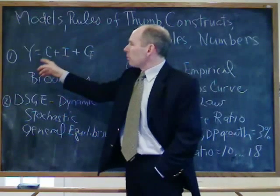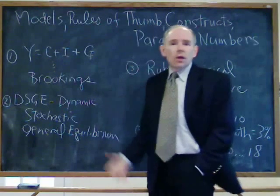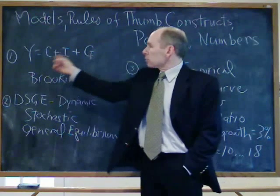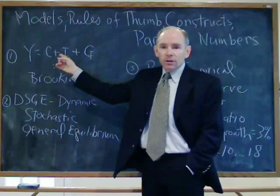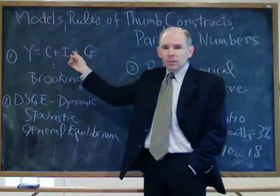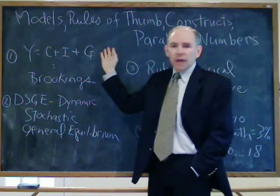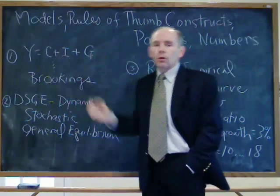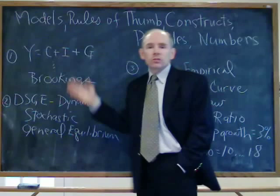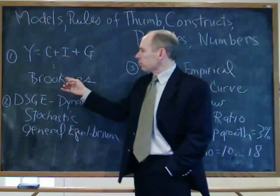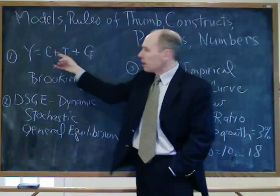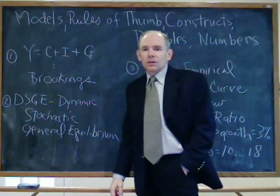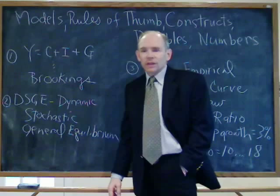Let's start with the most quintessential of macro models: Y equals C plus I plus G. That's the idea that GDP equals all that's consumed — you hear that all the time — plus all that's spent on investment, plus all that's spent by the government. You can also throw in NX, that's the net export sector. This was the historical model of macro, and it would be built into gigantic systems of equations like the Brookings model, where all these quantities would be broken down into equations and sub-equations. Those macro models did not have a great record of success.